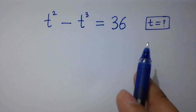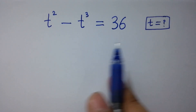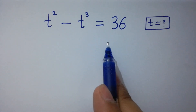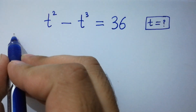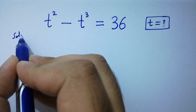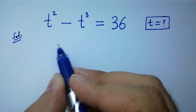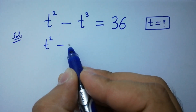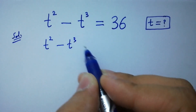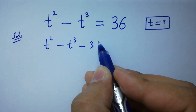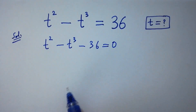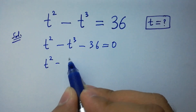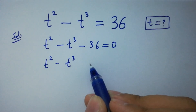Hello friends, find the value of t if t-squared minus t-cubed equals 36. It can be written as t-squared minus t-cubed minus 36 equal to 0.